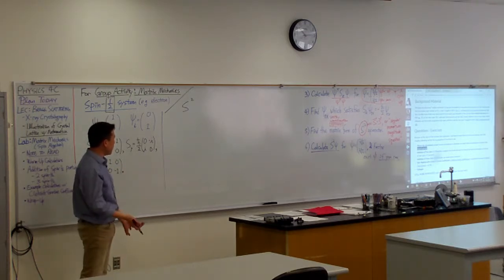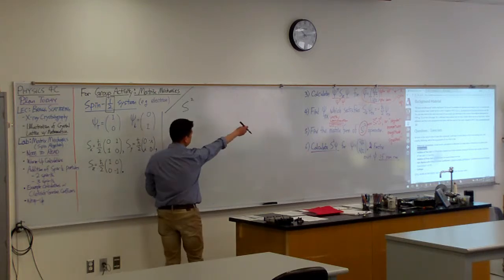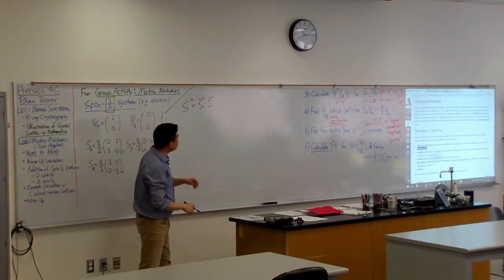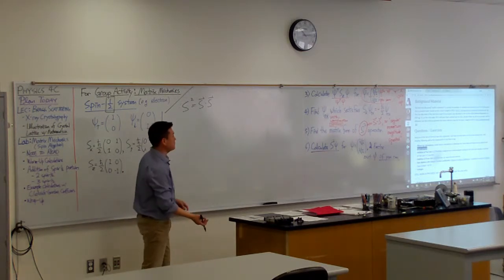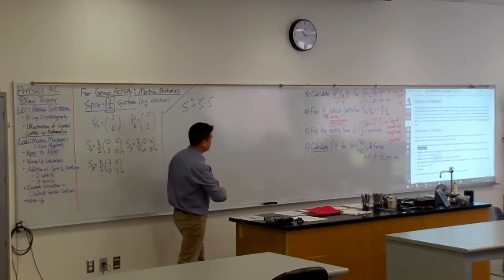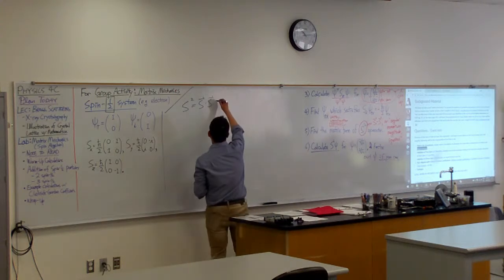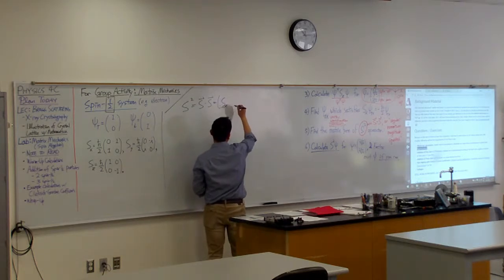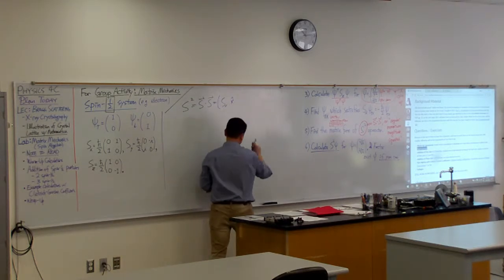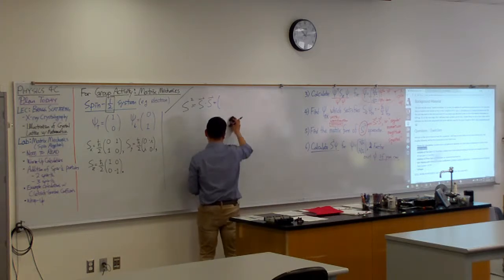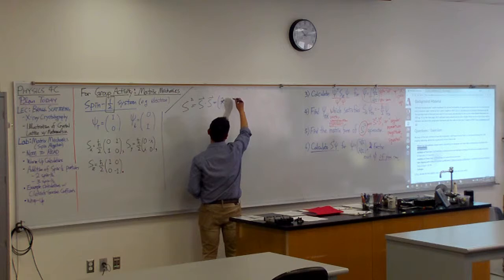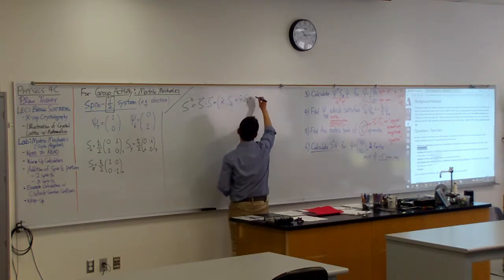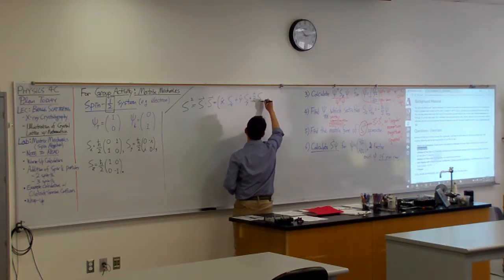Let me do a few more algebra annotations. This S squared means, as I wrote down there, it means S dot product with S. Let me just be extra careful and go one more step. This vector S, you can represent it in the unit vector form. So the X component times X hat, actually let me swap the order so there's no confusion. X hat times the X component plus Y hat times Y component plus Z hat times Z component.